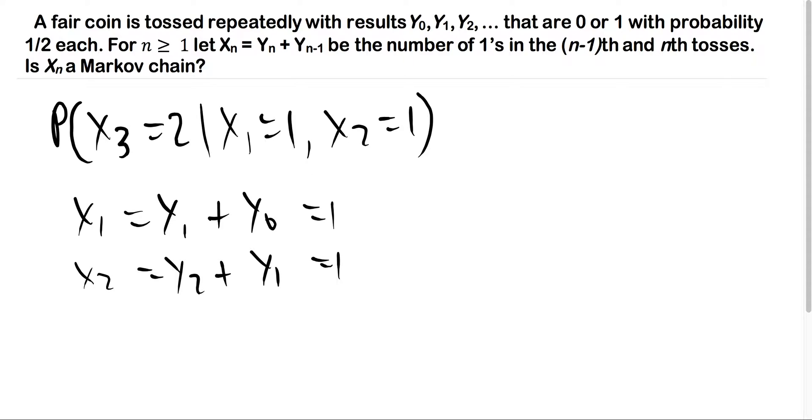The y's can only take values 0 or 1. This means y1 = 1, whereas y0 = y2 = 0.